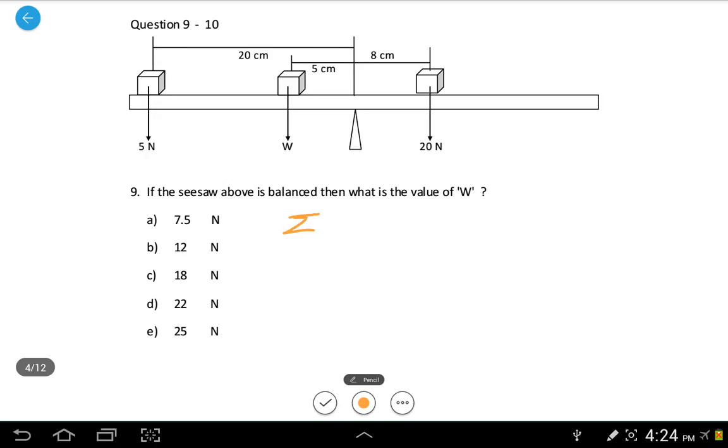So, we are putting the assumption that summation of torque counterclockwise should equal to torque clockwise. Anything from this side to the pivot will be creating a counterclockwise torque. Anything from this side to this side will be creating a clockwise torque.